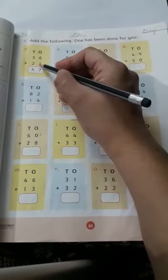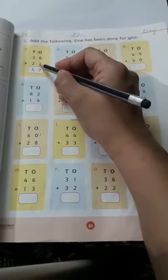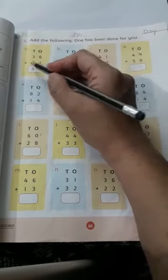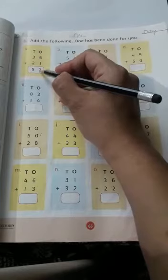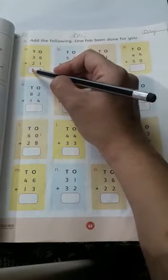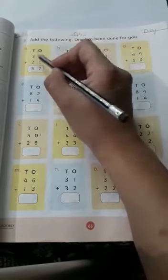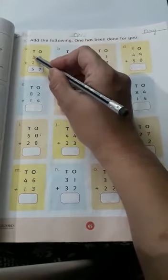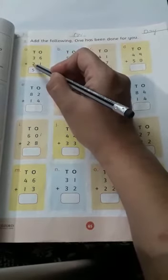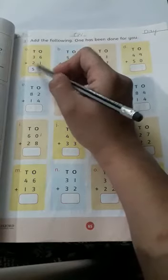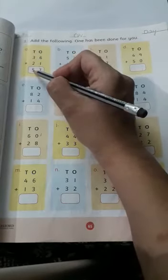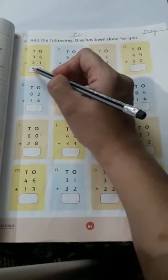Six plus one equals seven. You write seven in the given box. Always write ones under ones and tens under tens. Next, moving towards tens, we have three and two. Three plus two equals five, so you write five under tens. Your answer is fifty-seven.